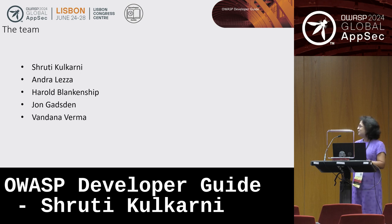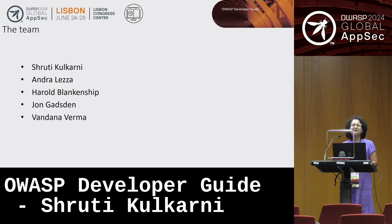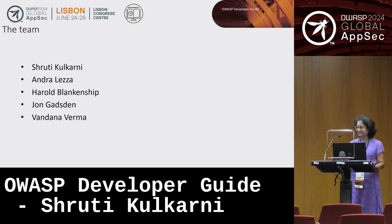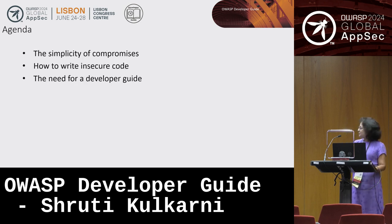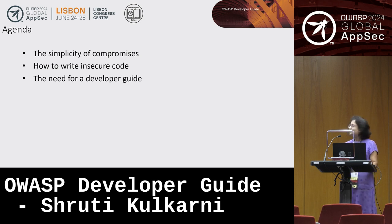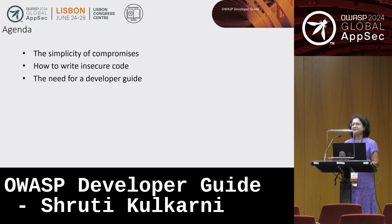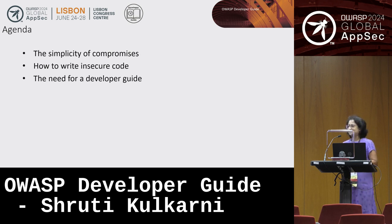It's five of us who are project leaders for this guide. Just so you know, this is a guide that is written for the developers and by the developers — John, myself, Andrew, Harold, Vandana — we are all developers in one form or another. The agenda for today is: the simplicity of compromises, how to write insecure code, and the need for a developer guide — what insecure code is and what compromises take place with applications.